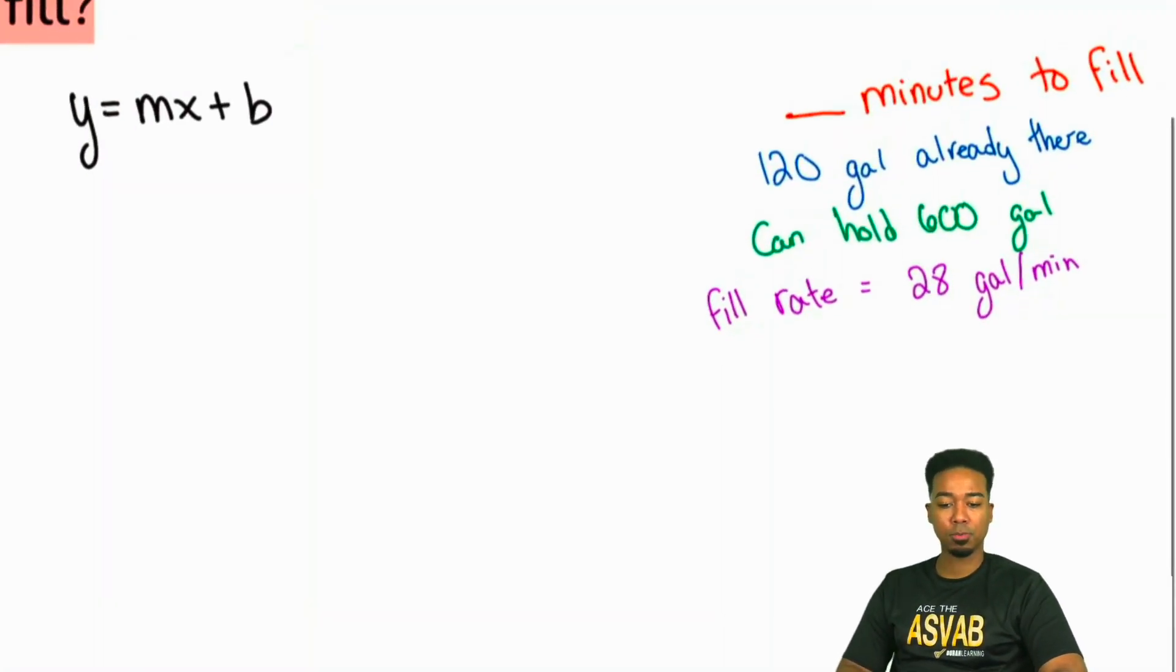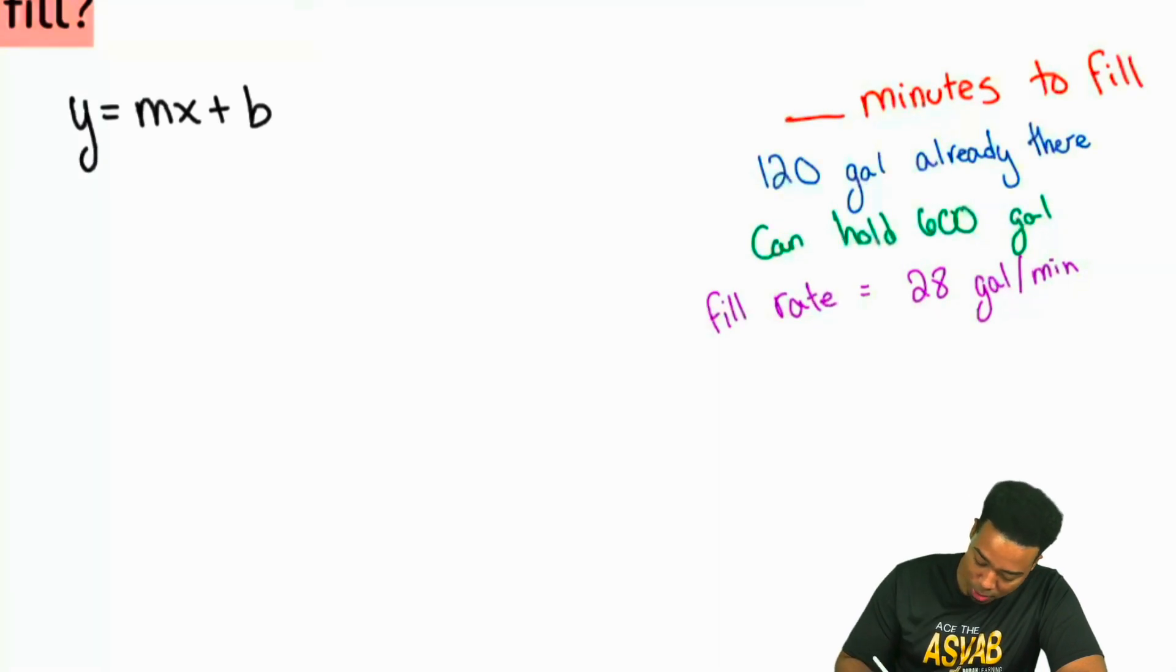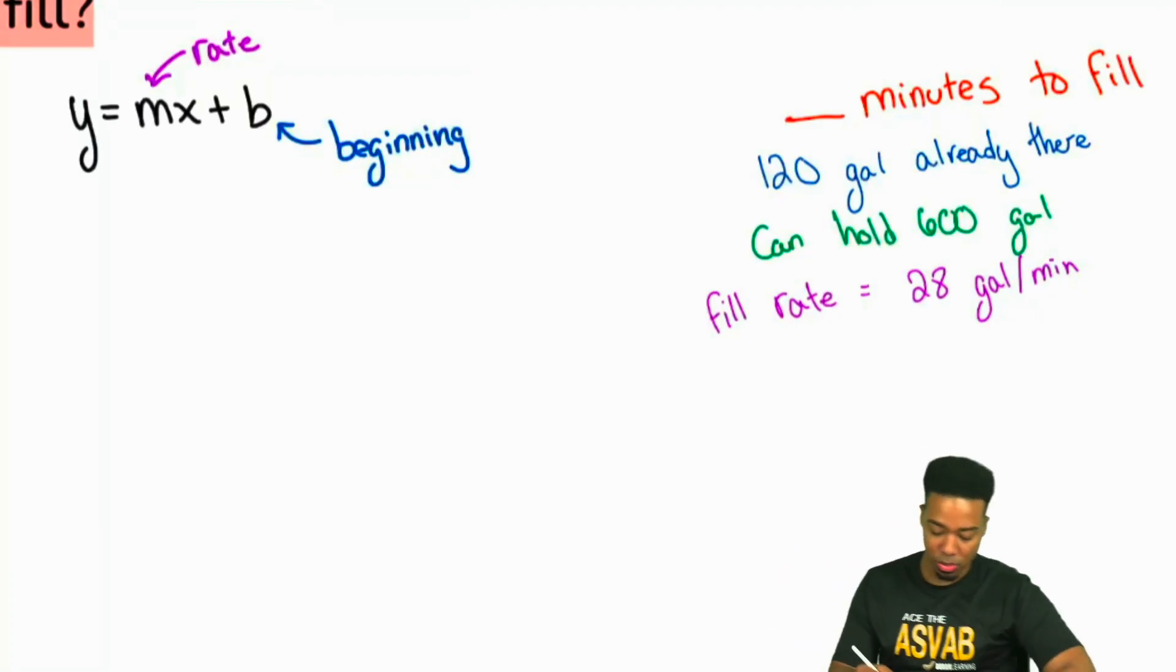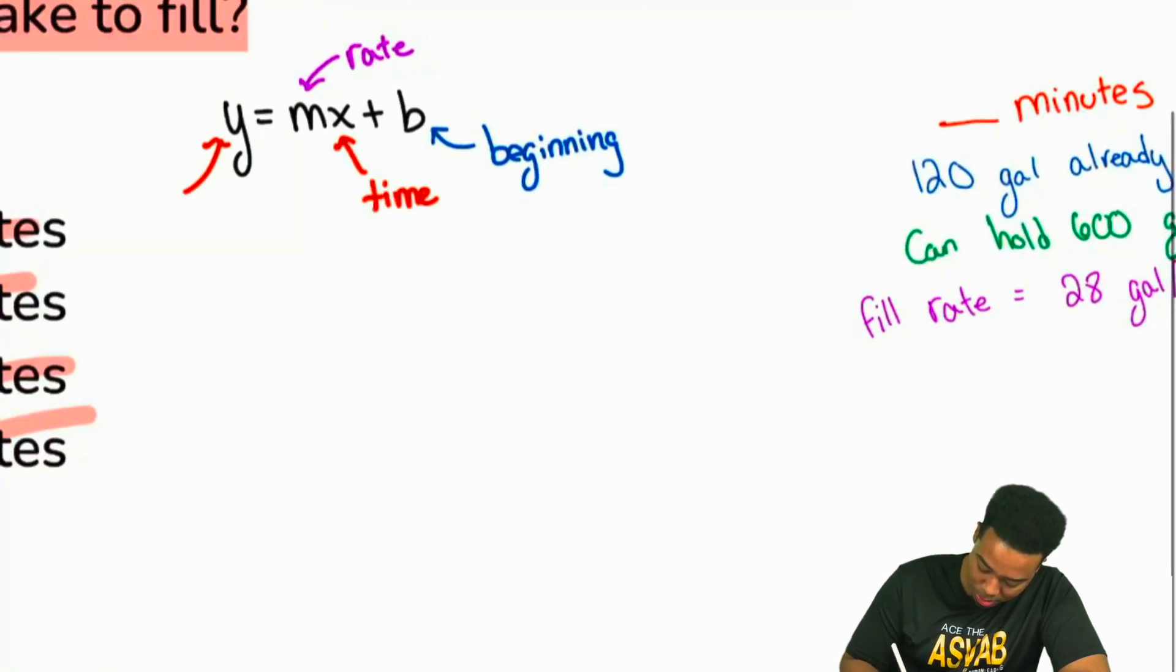Let's show you first Y equals MX plus B. When we're using Y equals MX plus B, my party people, well the thing is, as long as you know what each of these pieces mean, you're good. So let me just remind you here: B is what's in the beginning. So that is what's there in the beginning. Your M is going to be your rate.